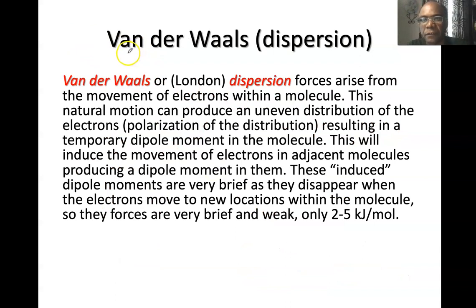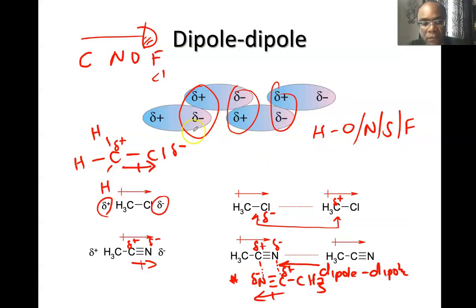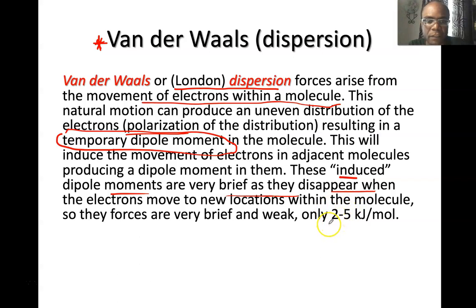The weakest of the three — hydrogen bonding, dipole-dipole, and van der Waals — is van der Waals, otherwise called London dispersion force. These arise from the movement of electrons within a molecule, inducing charges due to polarization or distribution of electrons. For London dispersion, you get a temporary dipole moment — it's not permanent like in dipole-dipole or hydrogen bonding. The induced dipole moments are brief and disappear when electrons move to new locations. The strength of London dispersion forces is 2 to 5 kilojoules, less than dipole-dipole and hydrogen bonding.